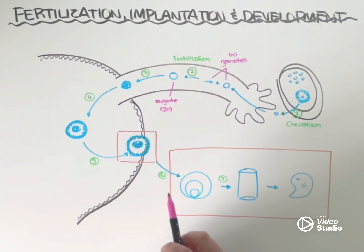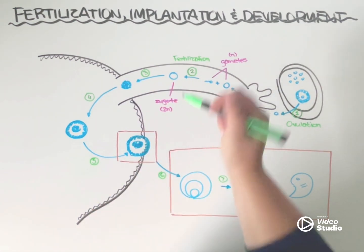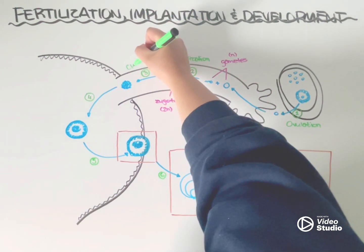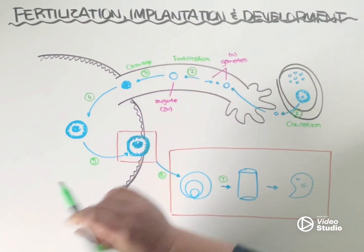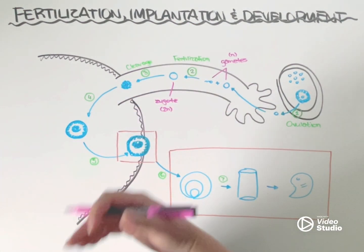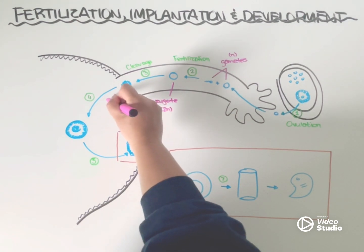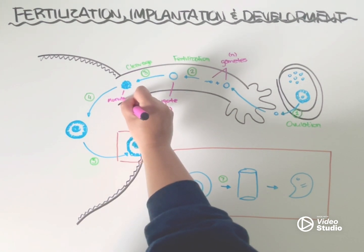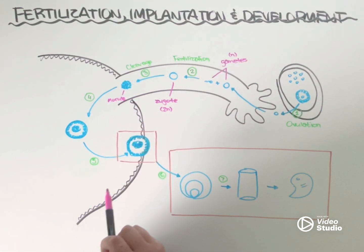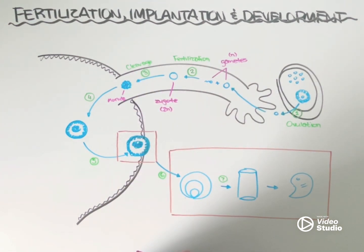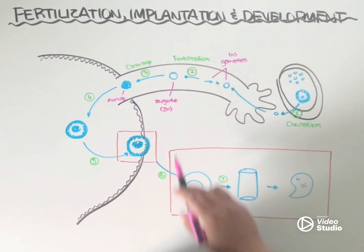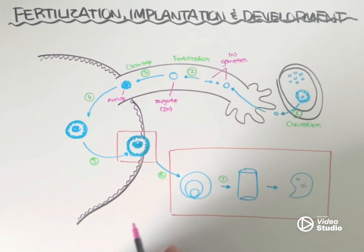Next, that single-celled zygote is going to undergo a series of very rapid cell divisions called cleavage, and it's going to produce a new structure that contains approximately 16 cells called the morula. The 16-celled morula is pretty much the same size as the single-celled zygote, because cleavage is a special type of cell division with rapid cell division without cell growth — interphase is cut short so the cell doesn't have time to grow between divisions. All of this is happening in the fallopian tube.